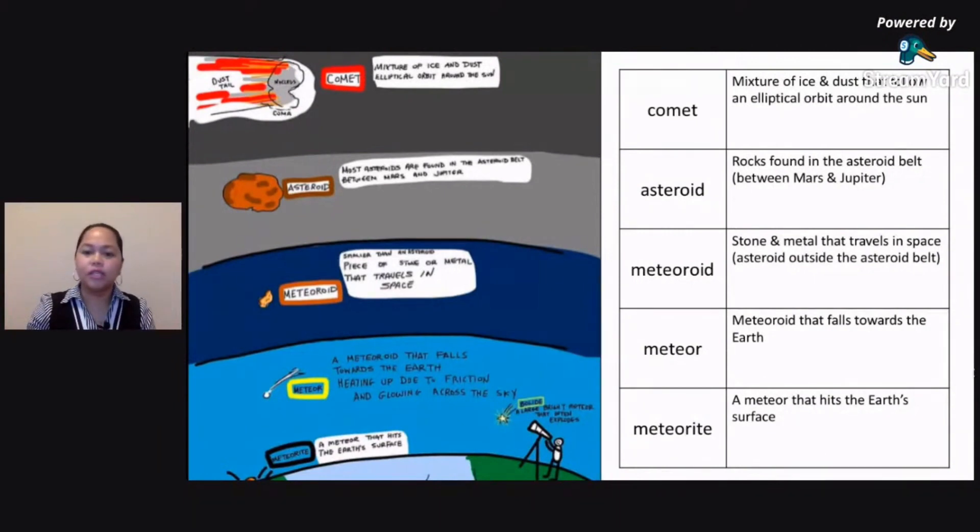When you say meteor naman, these are meteoroids that falls toward the Earth. So yung meteor mo, pag malapit na siya sa Earth, if it comes in contact with the atmosphere of the Earth, then that's when you call it a meteor.